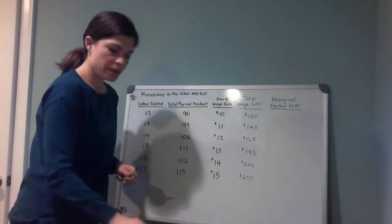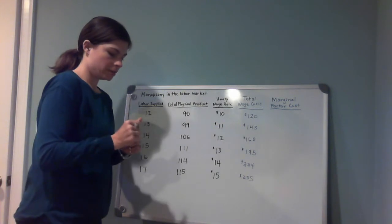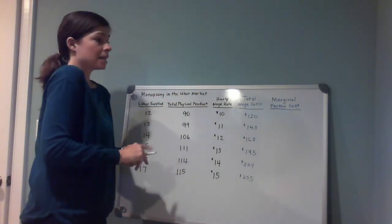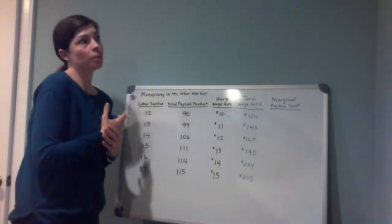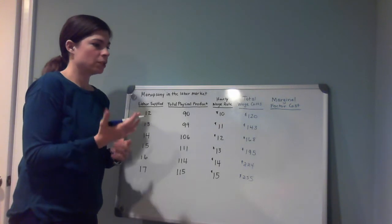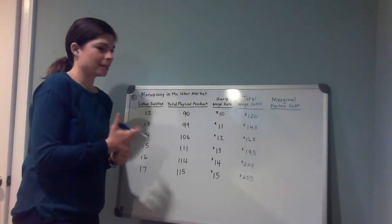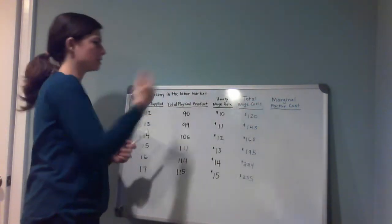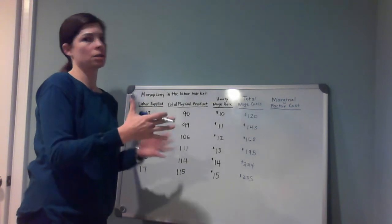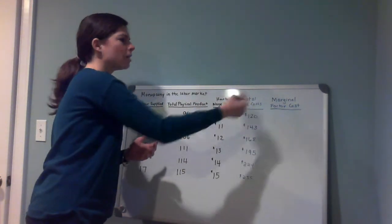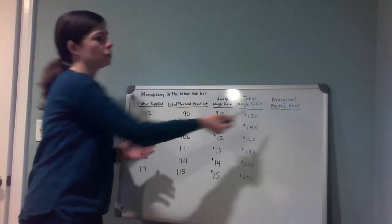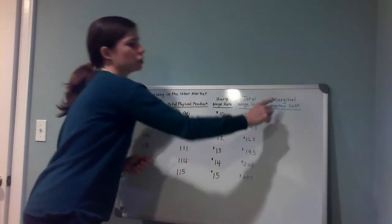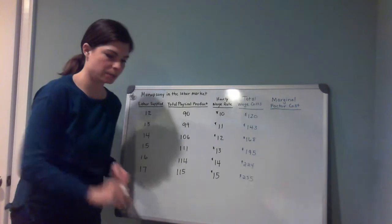The next thing to fill out is marginal factor cost. It's one of those economic terms that just means the marginal change in your factor cost — in this case the factor is labor. It could be flour if you're making pizza dough, or sugar if you're making candy. So these are interchangeable terms: you might also see it called marginal labor cost. If this were the only input, it could just be called marginal cost as well.